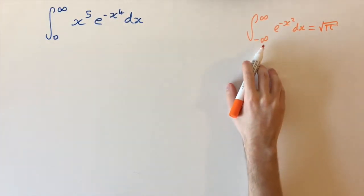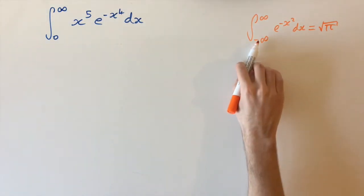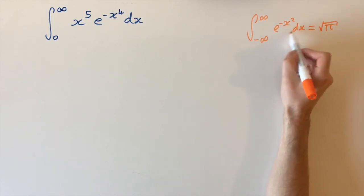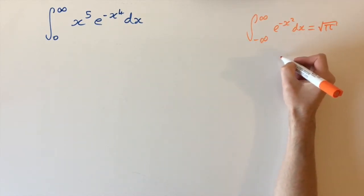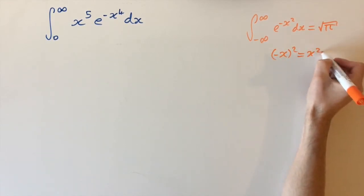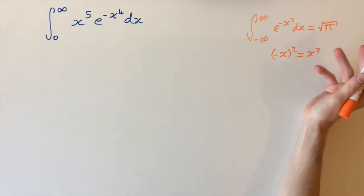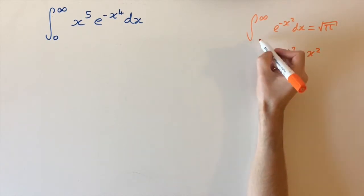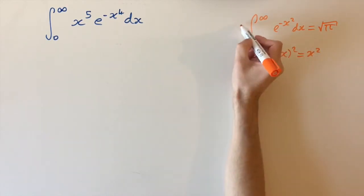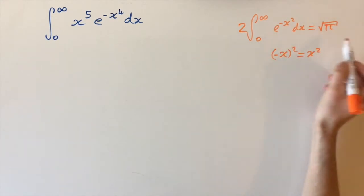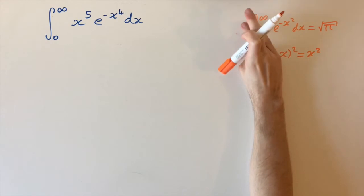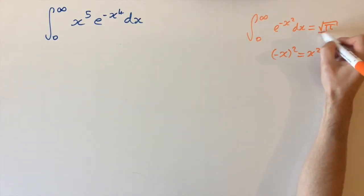To be able to use this, we actually need them to have the same limits, so we need to convert from minus infinity to 0. We observe that the function we're integrating is symmetric about the y-axis, because minus x squared is the same as plus x squared. So we can change the lower limit from minus infinity to 0 and put a 2 out the front. Dividing both sides by 2, we get that this integral equals the square root of pi over 2.